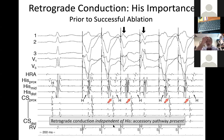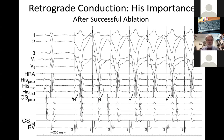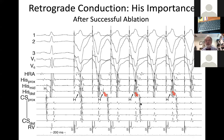After additional ablation, repeat burst pacing shows: a sinus complex first, then a His out the back followed by an A, another His before the local V with an A following, then His appearing with 2:1 retrograde conduction up the His-Purkinje system. Now atrial activation is dependent on the His—meaning conduction is going up the AV node. The accessory pathway has been successfully ablated.